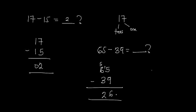Now let's check if that is true — if we add 39 and 26 we should get 65 back. So 9 plus 6 gives us 15; we write down the 5 and carry 1. That 1 comes to the tens: 3 becomes 4, and 4 plus 2 gives us 6, making 65. So our answer of 26 is correct.